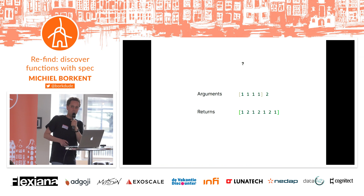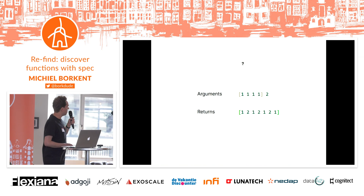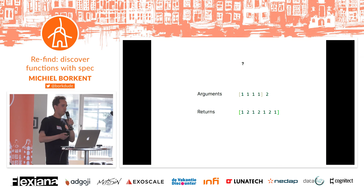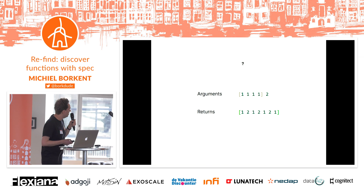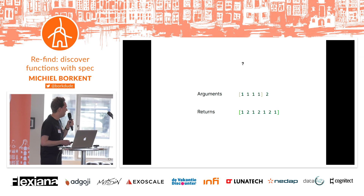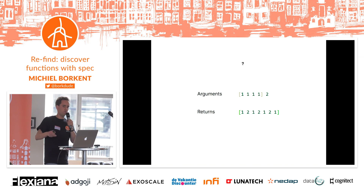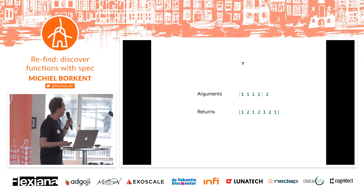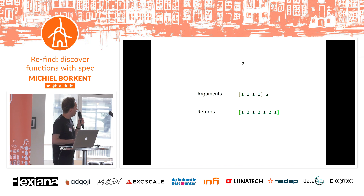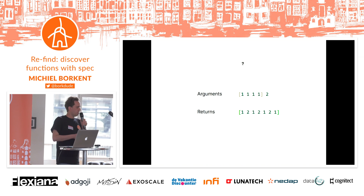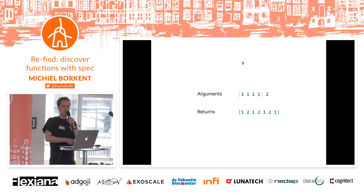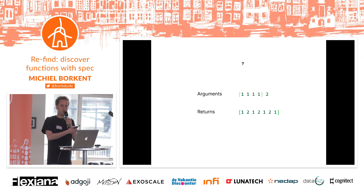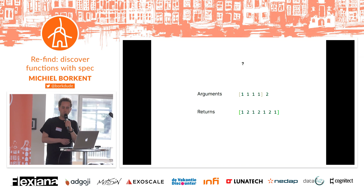Another example: we would like to find a function that takes a list of some things and alternates the elements of this list with some other element that you give it. What is the function in Clojure for this?